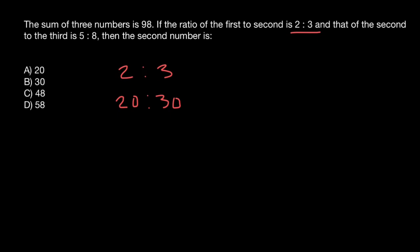Basically, ratios tell us how many times first and second numbers contain a certain number. For example, two contains one two times, and three contains one three times. Hence the ratio 2 to 3.